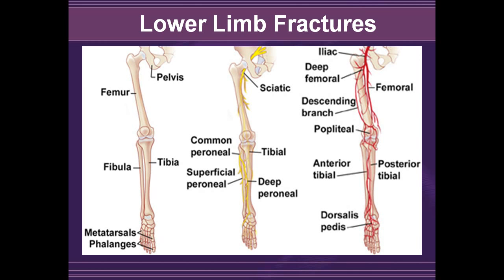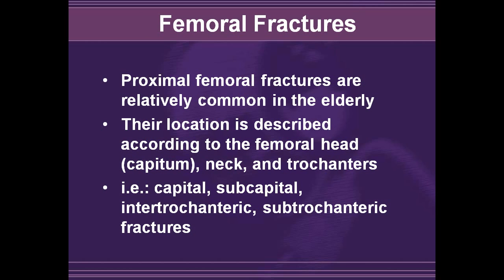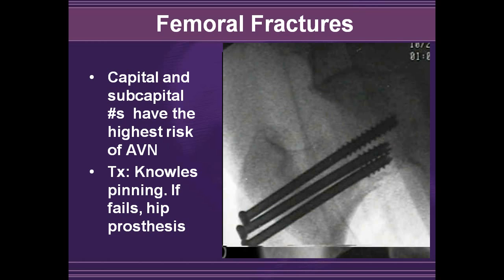Now we will cover some lower limb fractures. The lower limb includes the pelvis, femur, tibia, fibula, the various metatarsal bones, and the phalanges. Proximal femoral fractures are fairly common in the elderly, with location described according to the femoral head, neck, and trochanter. There are capital and subcapital fractures, intertrochanteric fractures, subtrochanteric fractures, and fractures of the femoral shaft. Capital and subcapital fractures have the highest risk of avascular necrosis. Subcapital fractures are often treated with cannulated pins; if this fails, patients often require a prosthesis. Intertrochanteric fractures occur most commonly in patients with osteoporosis, AVN is uncommon, and they are usually treated with a dynamic hip screw.